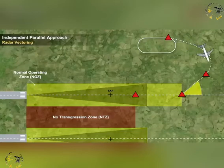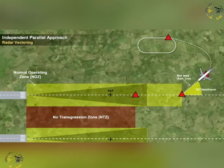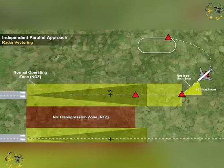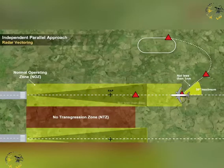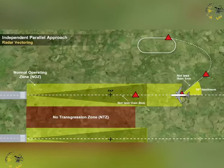Whilst vectoring to intercept the ILS or MLS final track, the final vector is to be such to enable the aircraft to intercept it at an angle not greater than 30 degrees, and to provide at least one nautical mile of straight and level flight prior to interception. The vector shall also allow level flight for at least two nautical miles prior to intercepting the glide path.